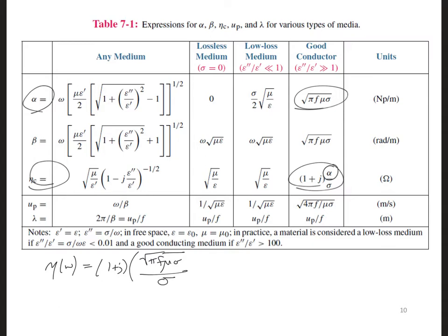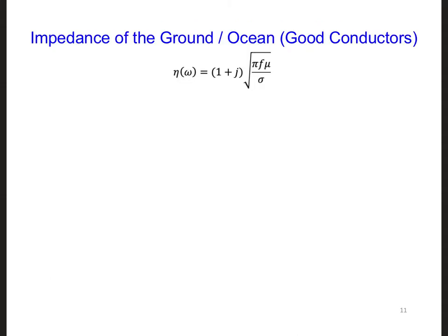Now we can combine these two sigmas. We have a sigma in the numerator and in the denominator. So I'm going to write 1 plus j square root of pi f mu over sigma. In the frequency domain, we typically write equations in terms of omega and not f. So let's convert this expression for eta so that it is in terms of omega. And we're going to do that using f is equal to omega over 2 pi. So now we're going to get 1 plus j square root of omega mu over 2 sigma.